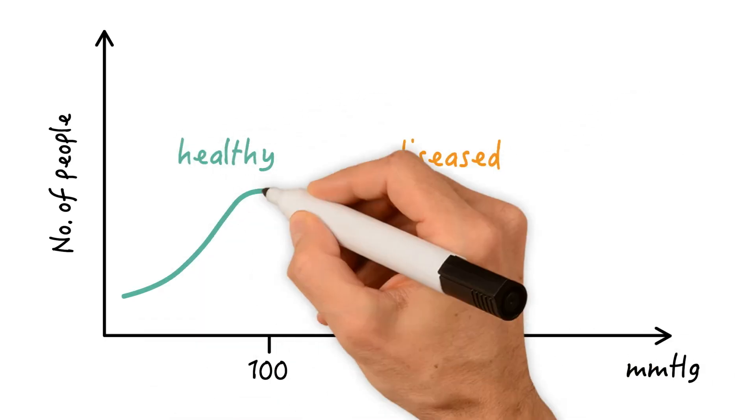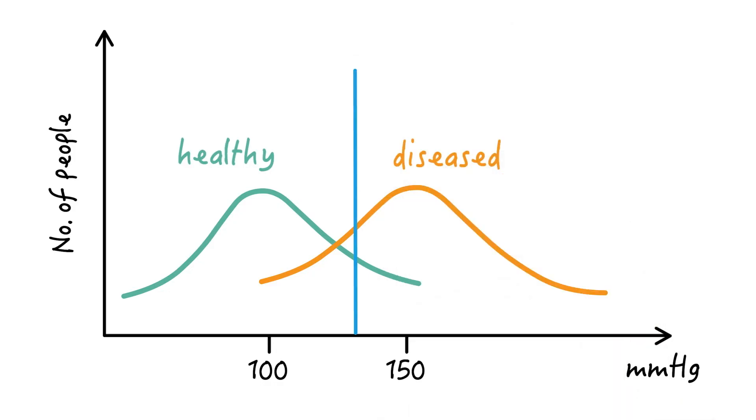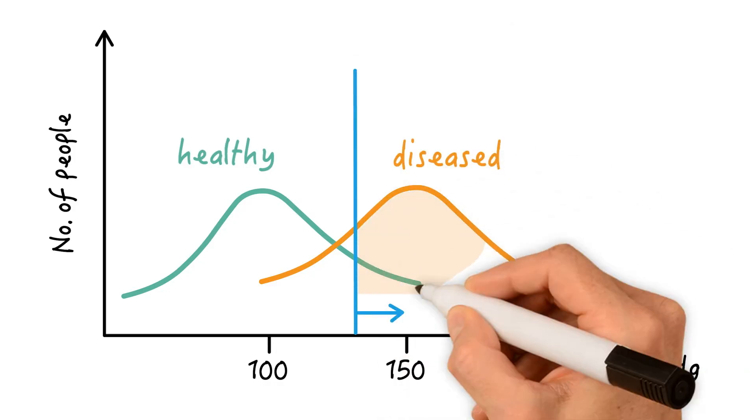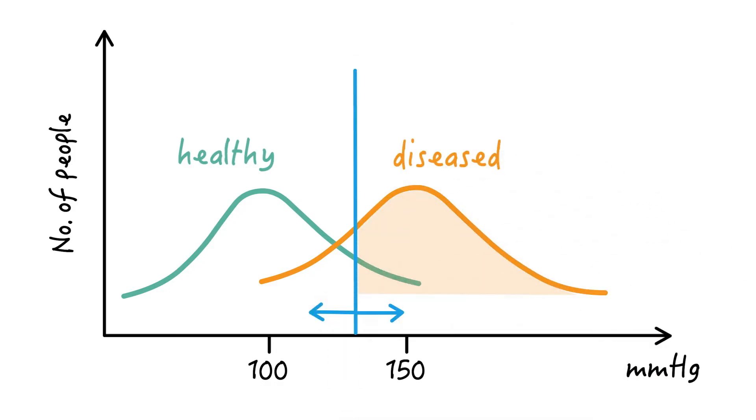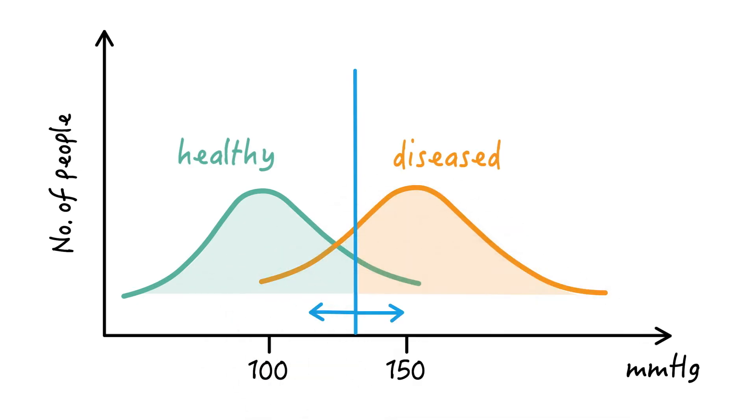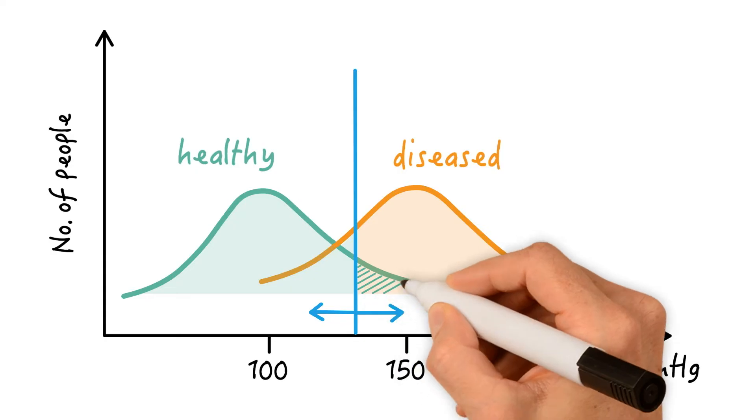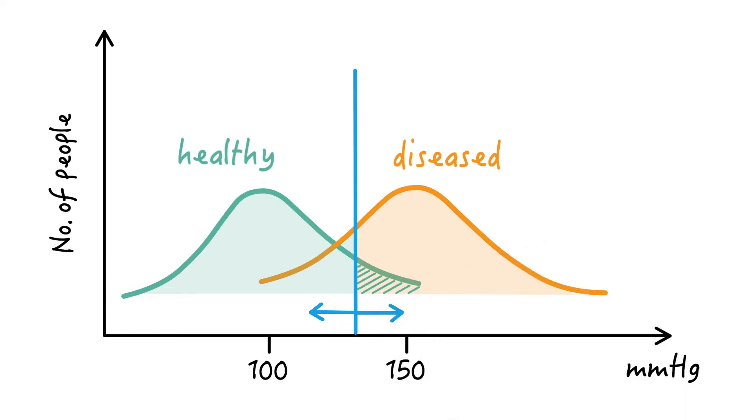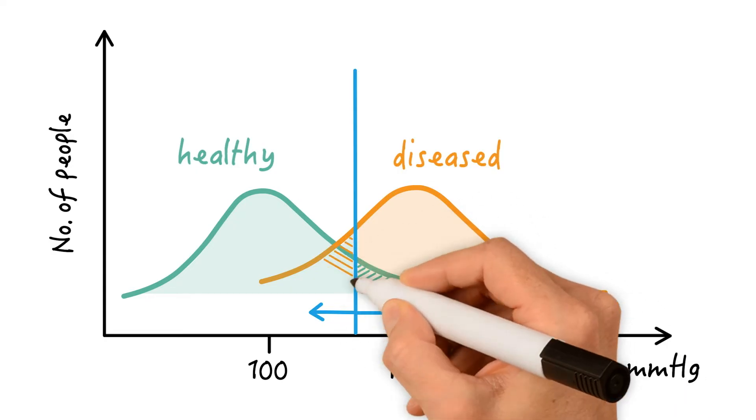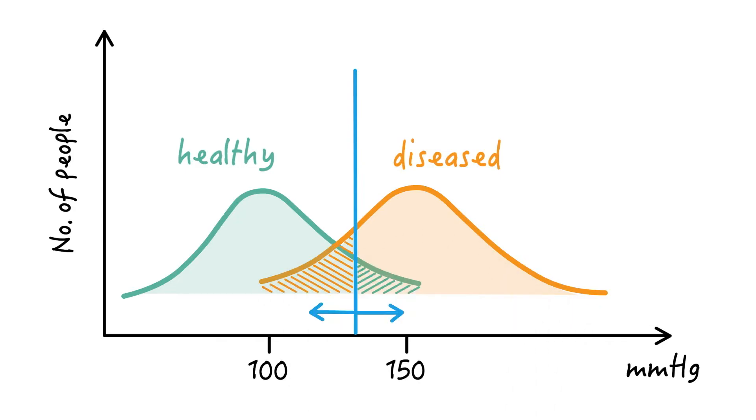Diseased and healthy individuals usually have different distributions of that variable. So we choose a threshold above which individuals are classified as diseased, and below which they're classified as healthy or non-diseased. Where we choose the threshold makes a huge difference. If the threshold is too low, many healthy individuals will be falsely classified as diseased. If it's too high, many diseased individuals will be falsely classified as healthy.